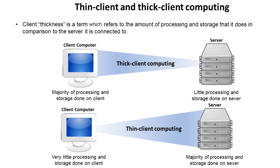At the other end of this scale we have thin client computing. Here, very little processing and storage is done on the client — virtually all of it is done on the server. For example, there may just be an operating system installed on the PC; the actual programs could be installed and run from the server. Every time you save a file, it gets saved remotely on the server rather than on the local PC.